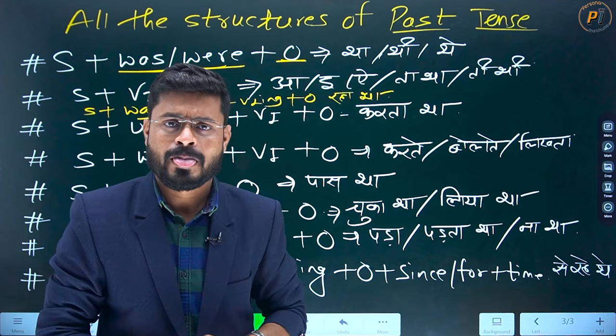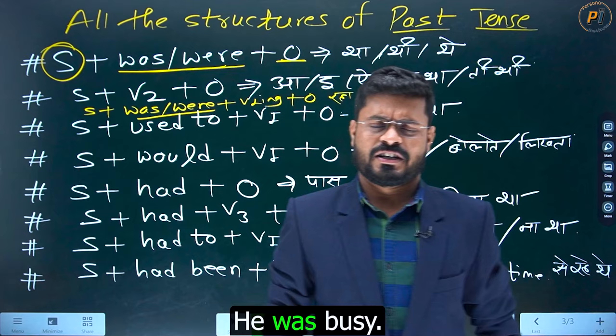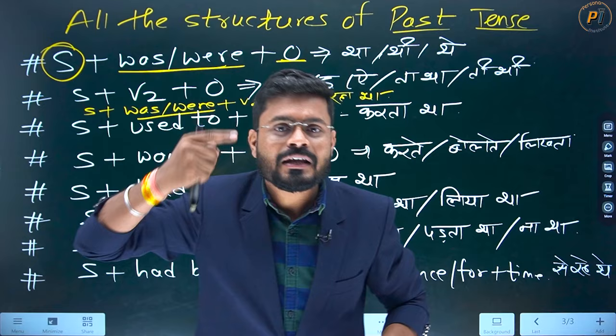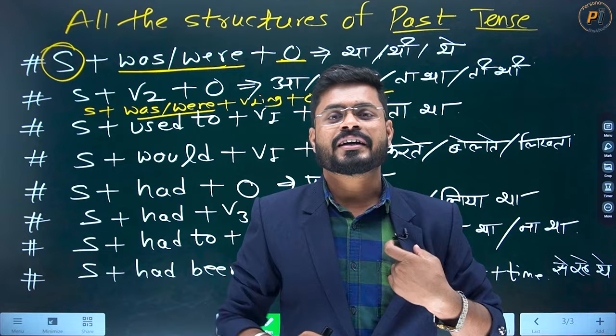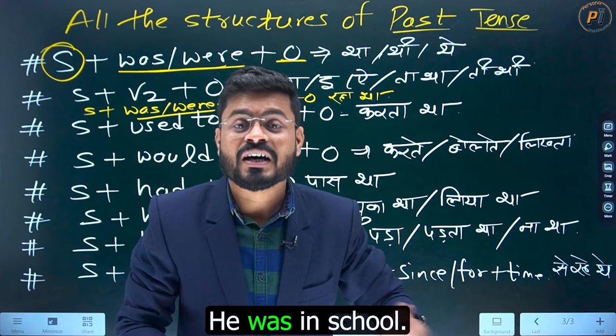Jab yeh differences aapko samajh aa jaayenge, toh automatic cheezein aasaan ho jaayengi. Dekhiye — maine kaha: woh vyast tha — he was busy. Woh college mein tha — he was in college. Aapko isko bolne ke liye apne brain ka balance — present, past, future ka — maintain karna hai. Jab bhi kuch tha aap, toh 'was/were' lagega. Woh school mein tha — he was in school. Woh apne doston ke saath tha — he was with his friends.